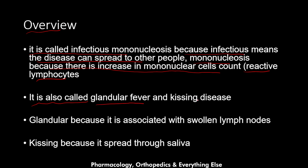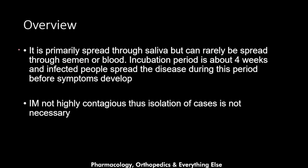Infectious mononucleosis has other names: glandular fever and the kissing disease. It is called glandular fever because it is associated with swollen lymph nodes and fever due to high temperature. It is called the kissing disease because it is primarily spread through saliva.